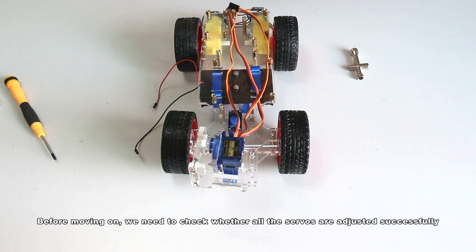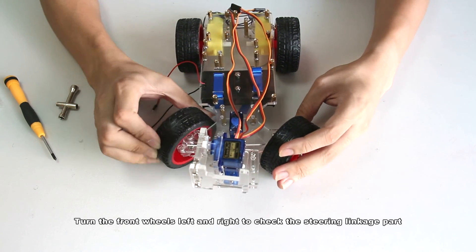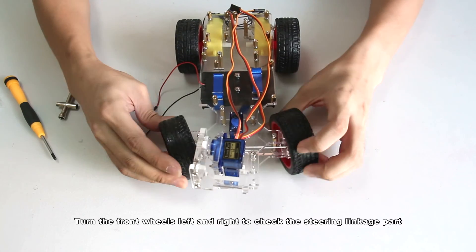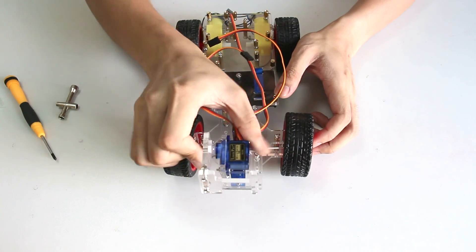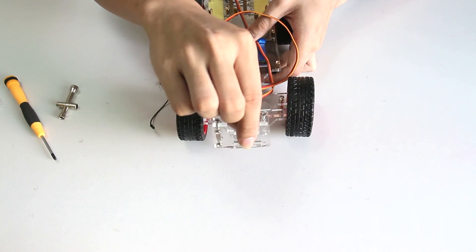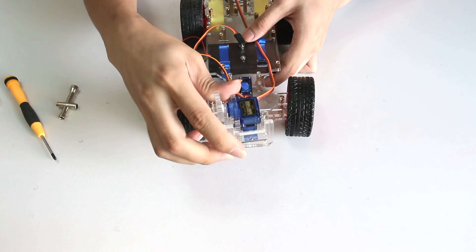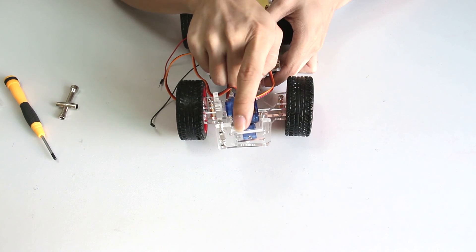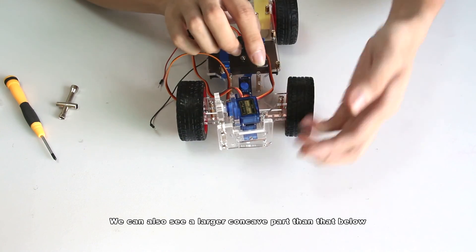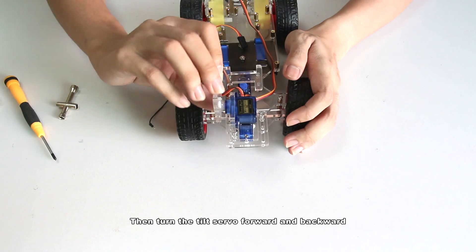Before moving on, we need to check whether all the servos are adjusted successfully. Turn the front wheels left and right to check the steering linkage part. Rotate those in the mount. Here is to set the camera. Turn the pan servos left and right. This is bound to clamp the camera. We can also see a larger concave part than that below. Then turn the tilt servos forward and backward.